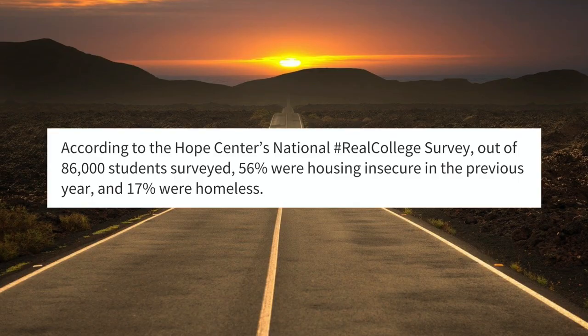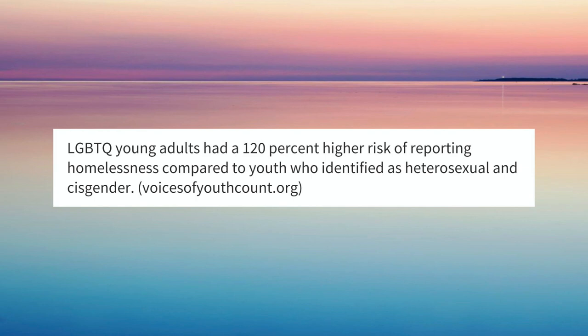According to the Hope Center's National Real College Survey, out of 86,000 students surveyed, 56% were housing insecure in the previous year, and 17% were homeless. LGBTQ young adults had a 120% higher risk of reporting homelessness compared to youth who identified as heterosexual and cisgender. I think to some degree all of our work is already hybrid — we're already moving back and forth between digital and physical spaces. What we're not doing is thinking intentionally about where the roadblocks are or where intersections happen.